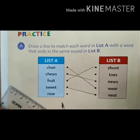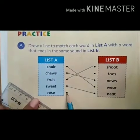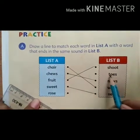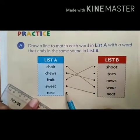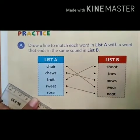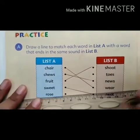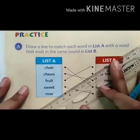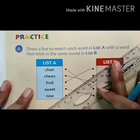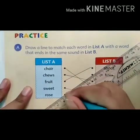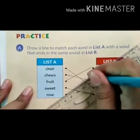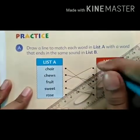And your last word is rose. Rose — toes, yes. अब हम इसे मैच करेंगे, list B के second word से.